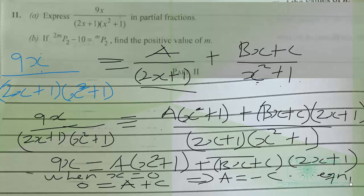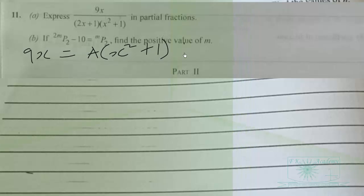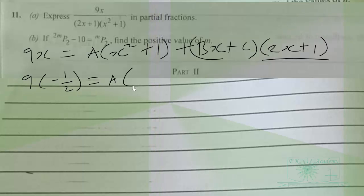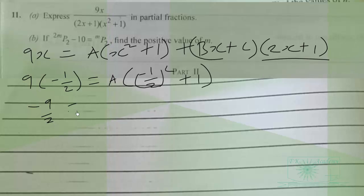When x equals −1/2, the (2x + 1) term becomes 0. So we get: 9 × (−1/2) = A((−1/2)² + 1). That gives −9/2 = A(1/4 + 1) = A(5/4), which is 5A/4.